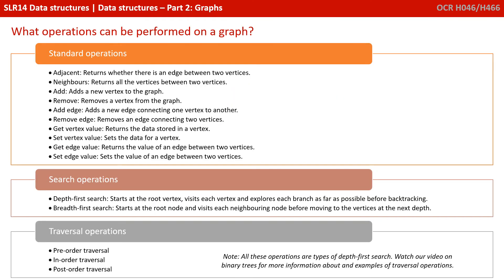There are a number of operations which can be performed on a graph data structure. We split those out here into standard operations, search operations and traverse operations.